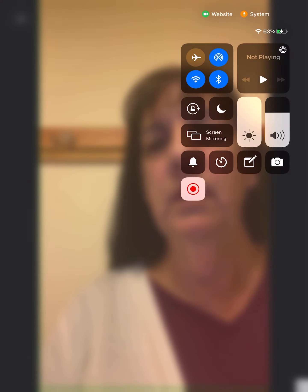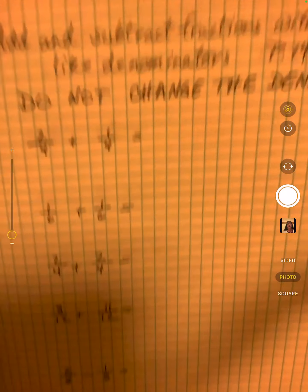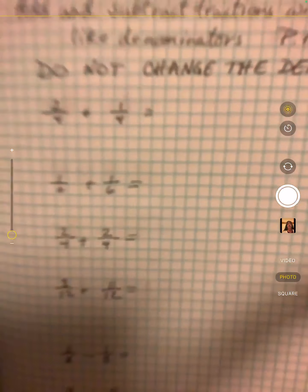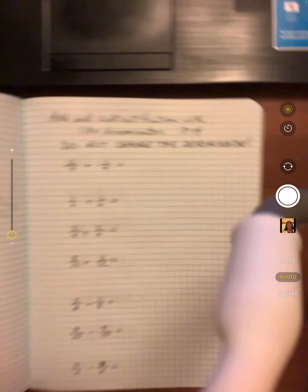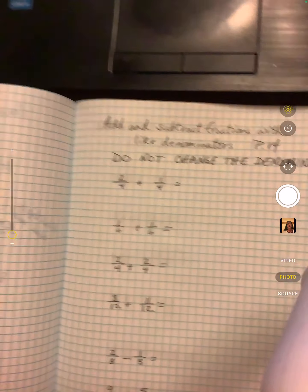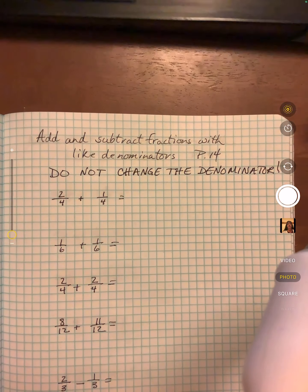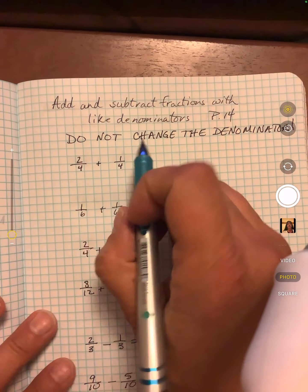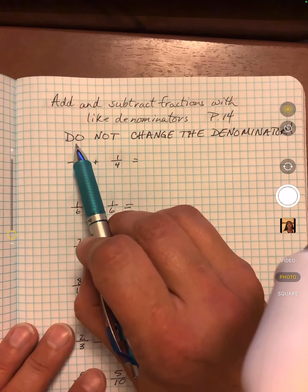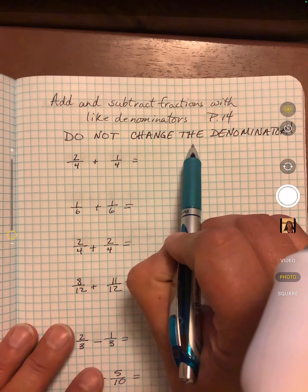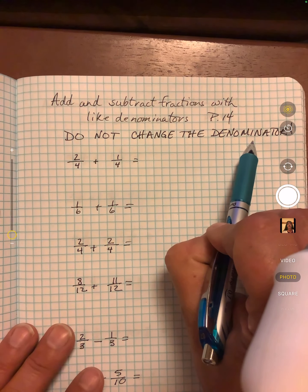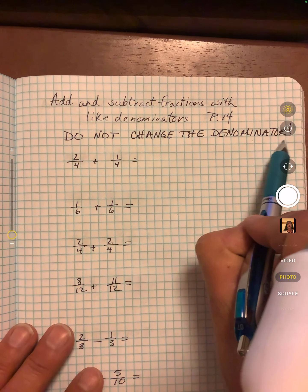So I'm going to show you some examples and then show you how to do the answers on iExcel though I think you already know. The number one thing: do not change the denominator. The denominator stays the same.